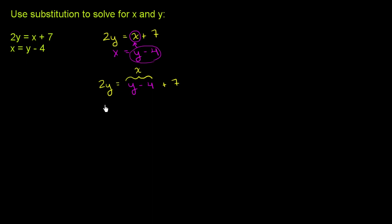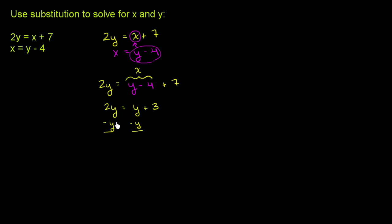So we get 2y is equal to y, and then we have minus 4 plus 7, so y plus 3. We can subtract y from both sides of this equation. The left-hand side, 2y minus y is just y. So y is equal to 3.